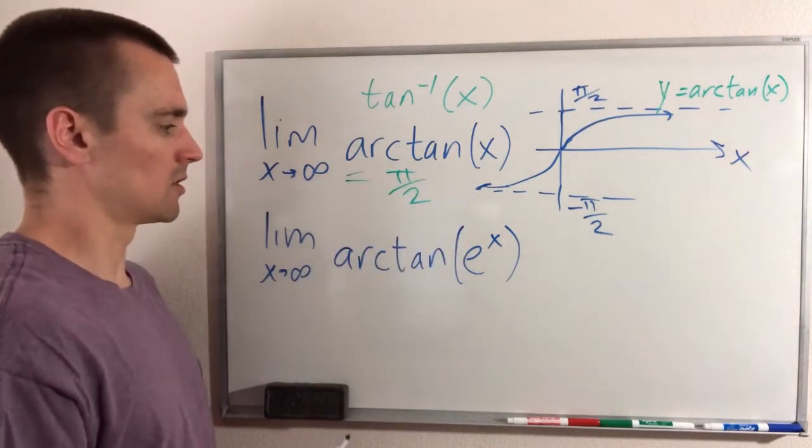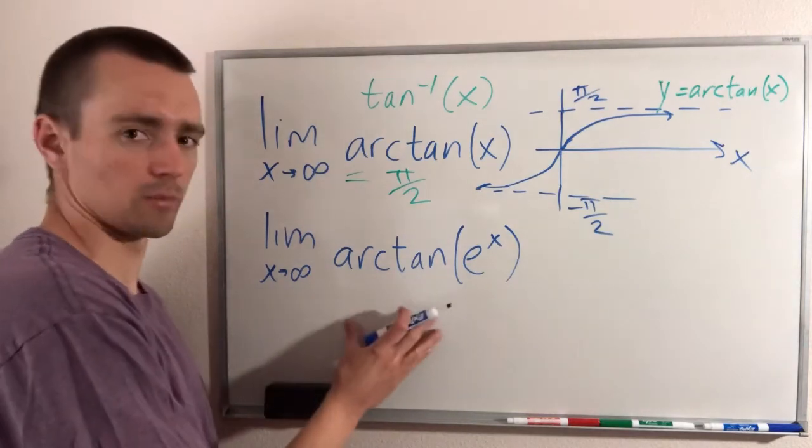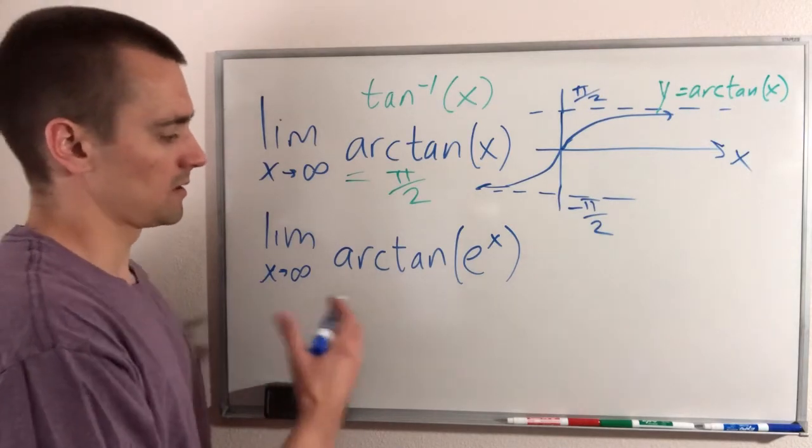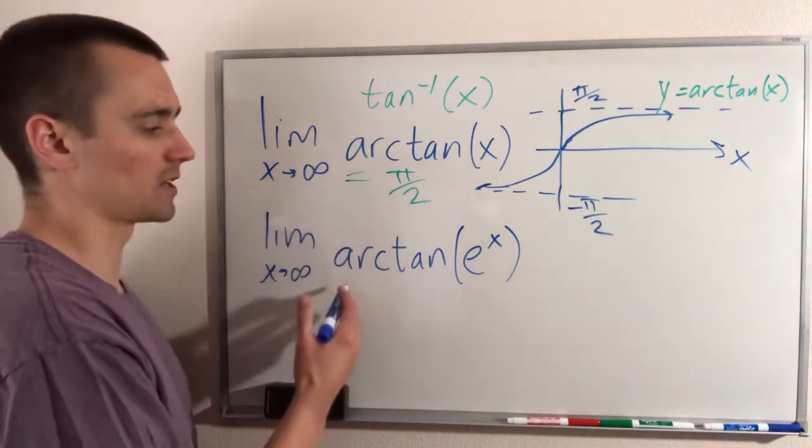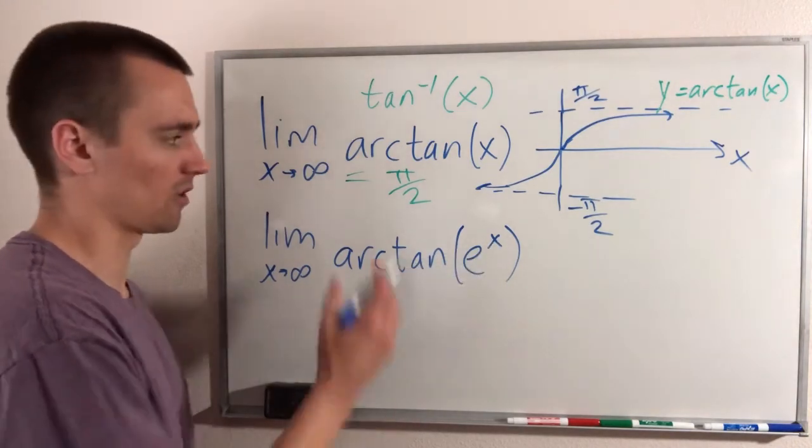Okay, so let's think about how that applies to this limit here. We have obviously arctan in it as well, but here we have arctan of e to the x instead of arctan x.